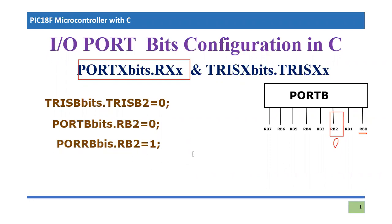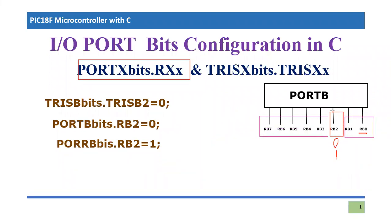So this is the procedure by which one can actually make individual bits or pins of any specific port as input or output. We know that by default every port is basically in input mode. Since I have written only these three lines, these other pins are basically in input mode, and only RB2 is right now in output mode. So if you want to configure any other pin of Port B as an output port, you have to change that specific TRIS bit.